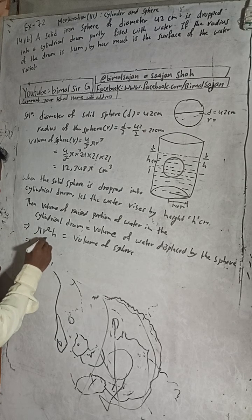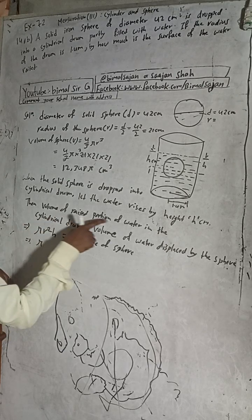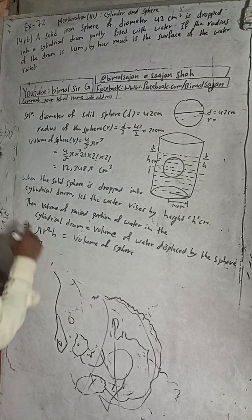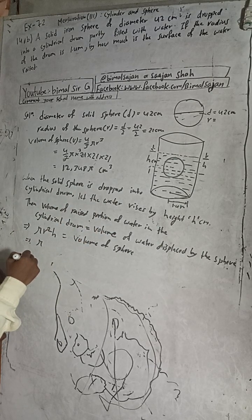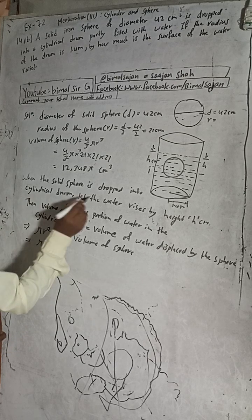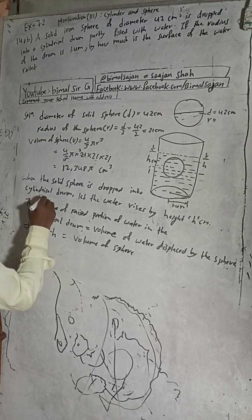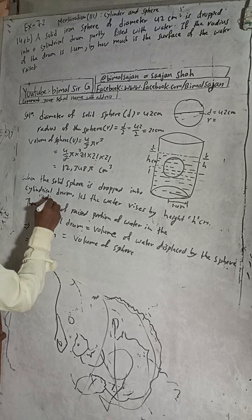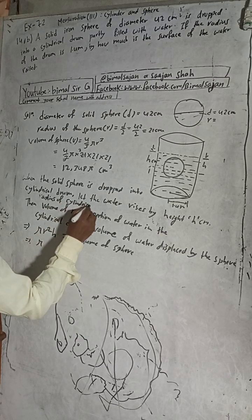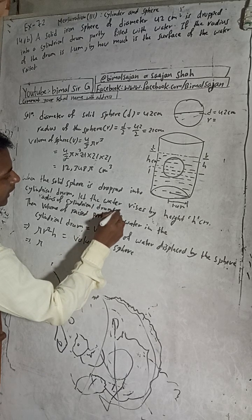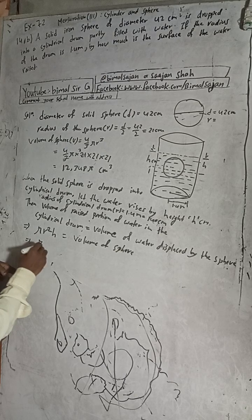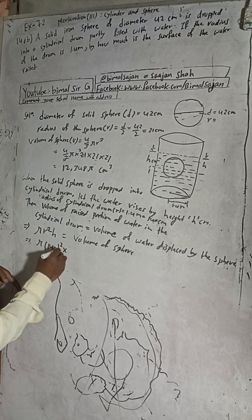So pi r squared h equals the volume of the sphere. Here r is the radius of the cylindrical drum, which is given as 1.4 meters, equal to 140 cm. So we substitute 140 squared into h, and this equals 12,348 pi.